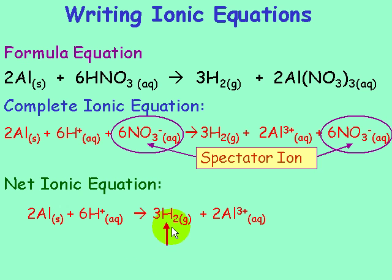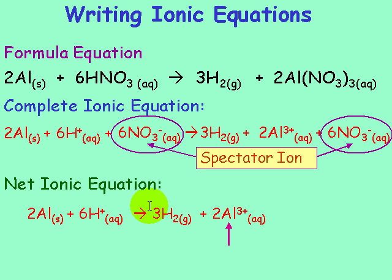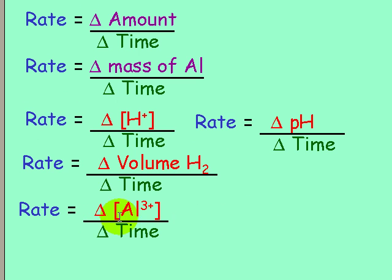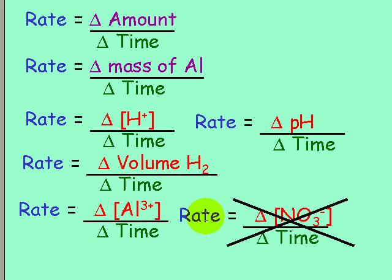H₂ is a gas product, so we could collect the gas and measure its change in volume — another possible rate equation is the change in volume of H₂ over change in time. Al³⁺ is an aqueous ion, so we could measure the change in its concentration — another rate equation is the change in concentration of Al³⁺ over change in time. NO₃⁻ is exactly the same on both sides — it's a spectator ion that does not change at all, so there would be no change in its concentration. Therefore, we cannot use NO₃⁻ in a rate equation.